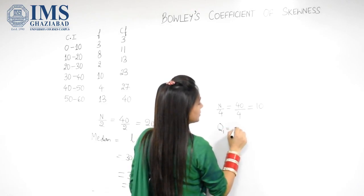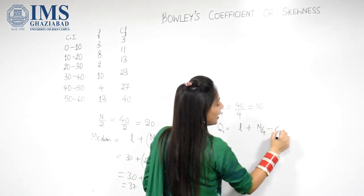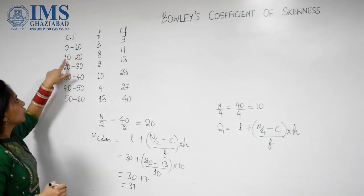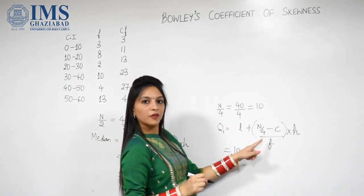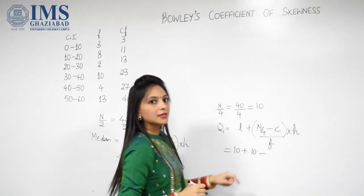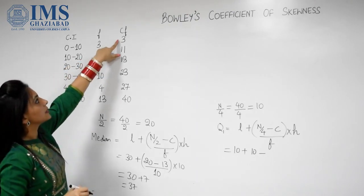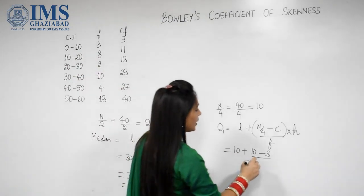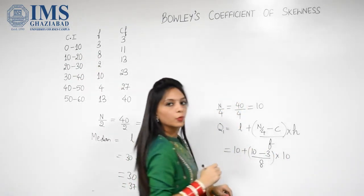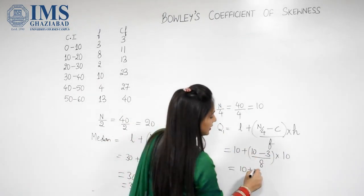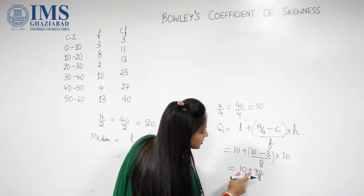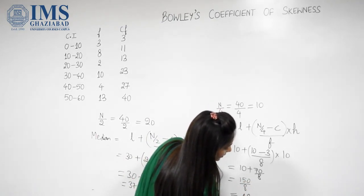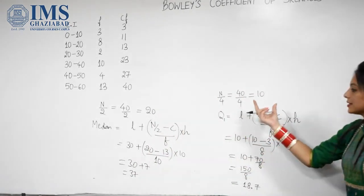The formula for Q1 is L plus N upon 4 minus C, upon F, into H. Because our quartile class is 10 to 20, the lower limit is 10. N by 4 is 10, minus the cumulative frequency of the preceding class which is 3, so 10 minus 3, divided by the frequency of the quartile class which is 8, into 10, the height of the interval. So we get 10 plus 70 divided by 8, which gives us 18.75. This is the value of our Q1.